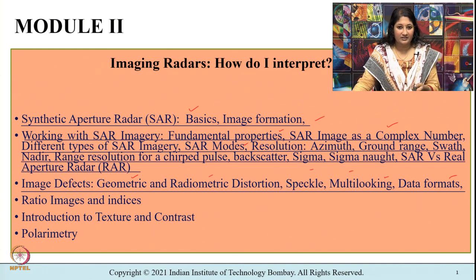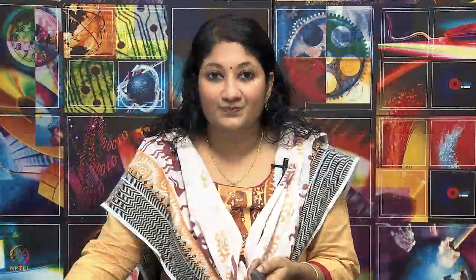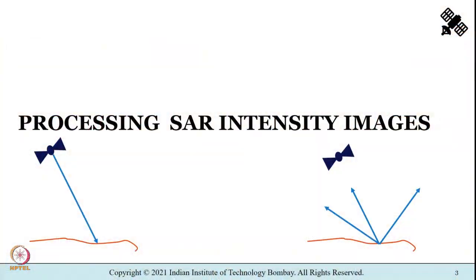Today we will be dealing with lecture 9 of module 2. In this part of the lecture we shall learn about some processing steps which are generally carried out for synthetic aperture radar products using the intensity image. This is also helpful for understanding the various pre-processing steps which should be followed before trying to classify an image.